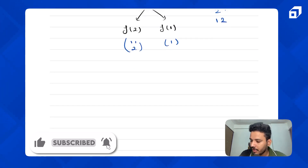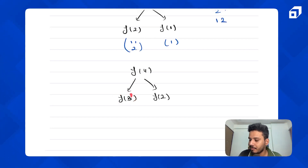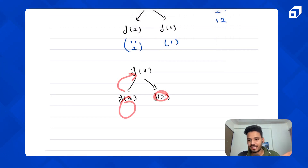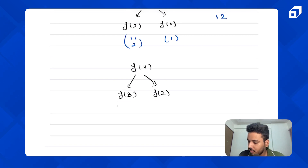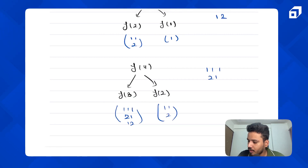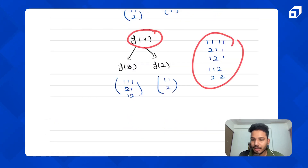Let's verify for the fourth step. If somebody tells me the number of ways to reach the third step and the second step, I can take all ways to reach the third step, add a one-length step, and reach the fourth. Or take all ways to reach the second step, add a two-length step, and reach the fourth. Ways to reach third: one-one-one, two-one, one-two. Ways to reach second: one-one, two. Combined that gives all five ways to reach the fourth step.